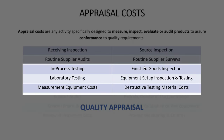On the operations side, there's a ton of work we do: in-process testing, which could include measurements or functional testing; finished goods inspection; equipment setup and testing to check that our process parameters are in a validated state; and destructive testing. All of the costs associated with our measurement equipment, as well as laboratory testing, fall into the appraisal cost bucket.